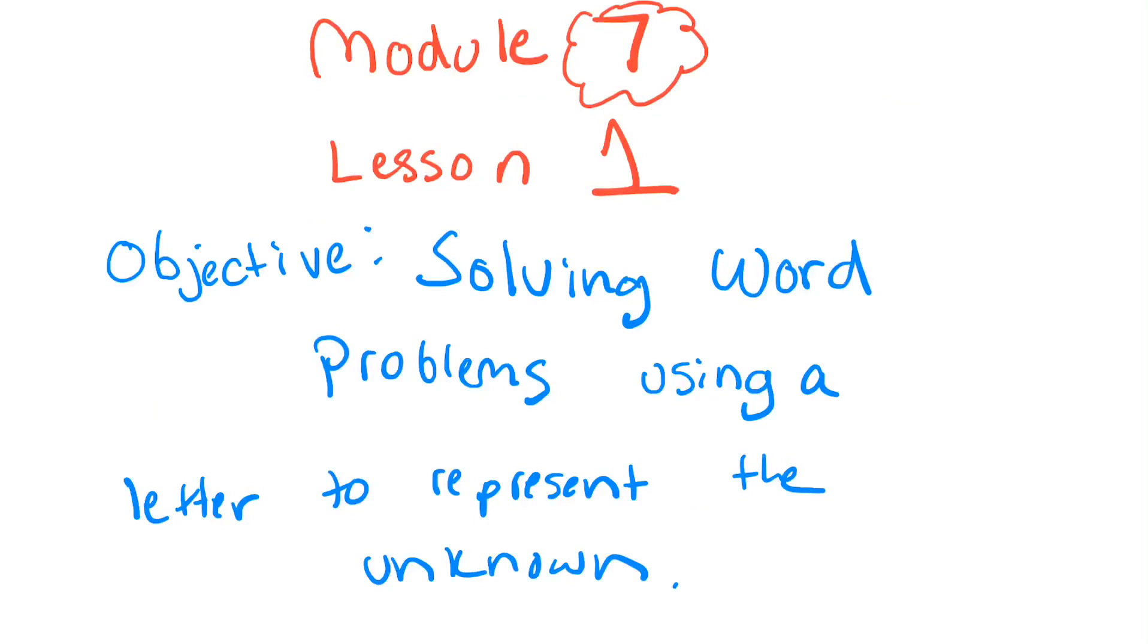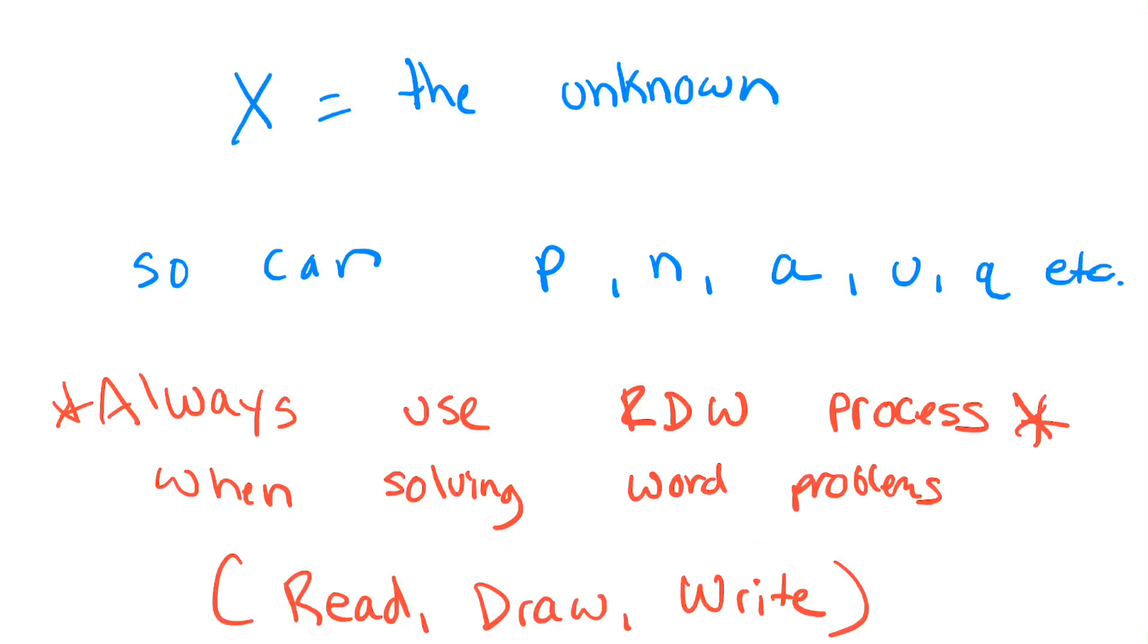Okay, so that would be the end of that module. Congratulations if you already finished it on Zern. You did great. So now we're looking at Module 7, Lesson 1. This is a new module. This is a lot of review. But this is something we did talk about around January or February. And the objective is solving word problems using a letter to represent the unknown. So what we don't know is represented with a letter.